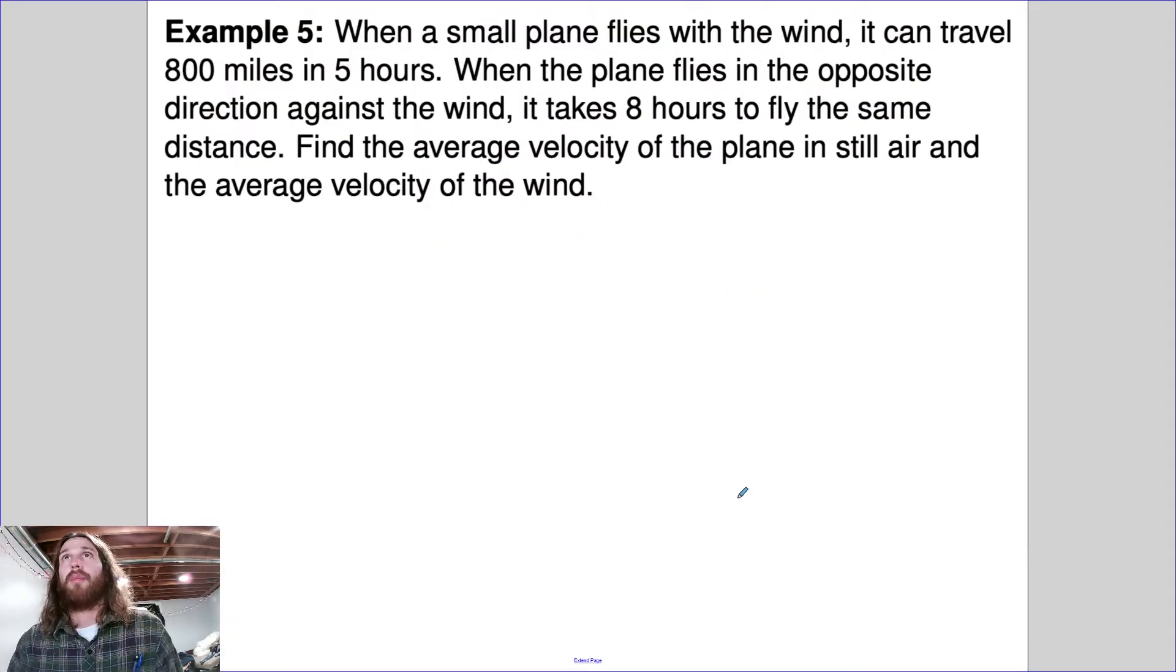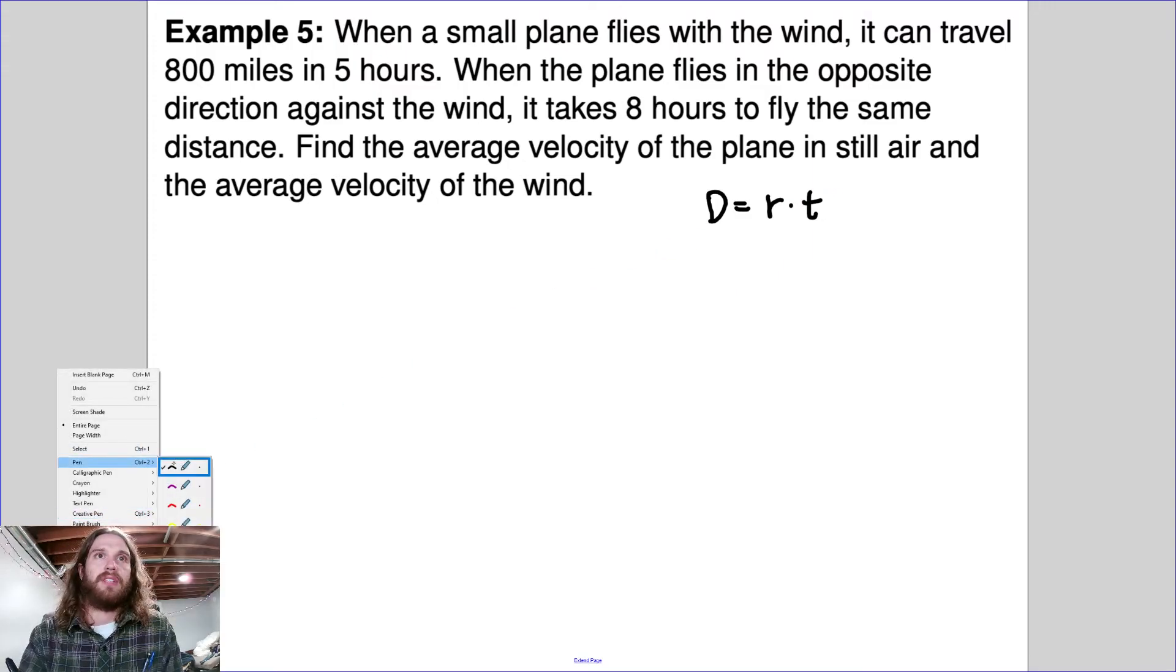And now for the fun one. When a small plane flies with the wind, it can travel 800 miles in five hours. When the plane flies in the opposite direction against the wind, it takes eight hours to fly the same distance. Find the average velocity of the plane in still air and the average velocity of the wind. This is kind of strange, but it's really not too bad if you know a couple basic things. In order to do this problem, you have to remember this old formula. There's this classic d equals rt or distance equals rate times time. And we need that to be able to do this problem.